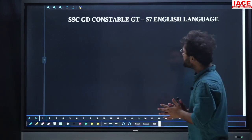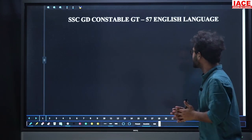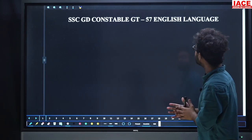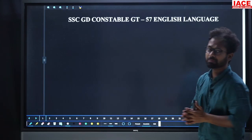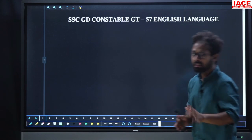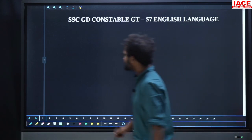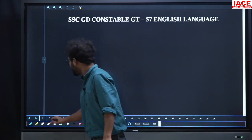Dear students, welcome to IAC. Today is a CGT Constable Grant number 57. English explanation is here. So let us start. Listen carefully.